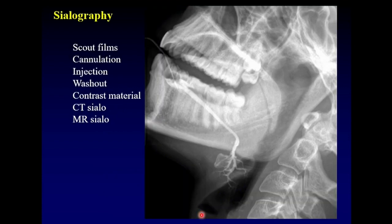This is an example of conventional sialography of the submandibular gland. We begin by doing scout films to look for stones, and then we cannulate through the puncta. In this case, the puncta of Wharton's duct is right on either side of the frenulum in the floor of mouth. We inject our contrast material and take our sialographic pictures like this one.